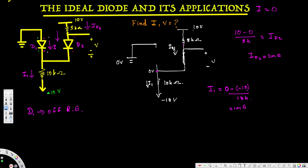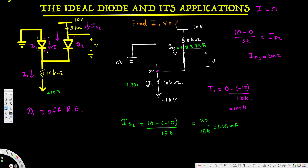Since this is now an open circuit, the current id2 flows through the entire series loop. So id2 = 10 minus (minus 10) divided by the total resistance of 5k + 10k = 15k. That gives us 20 divided by 15k, which equals 1.33 milliamps. This current of 1.33 milliamps flows through both the 5k and 10k resistors.